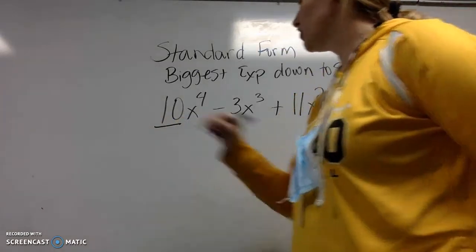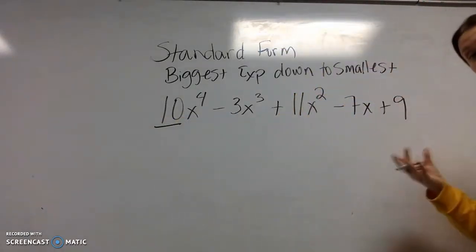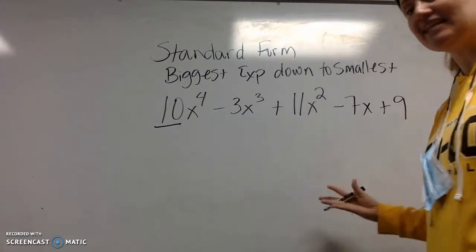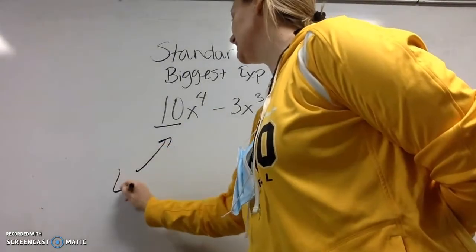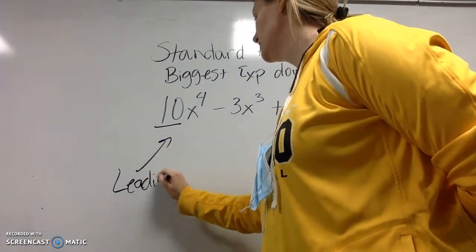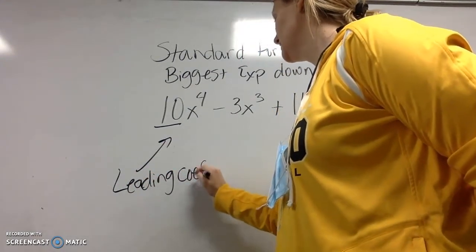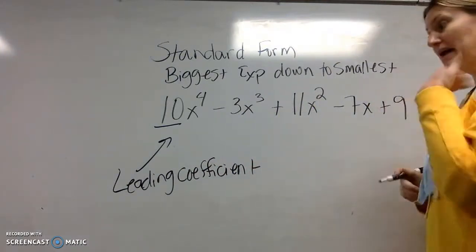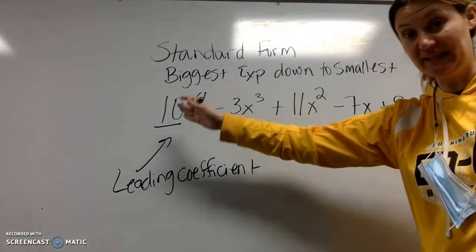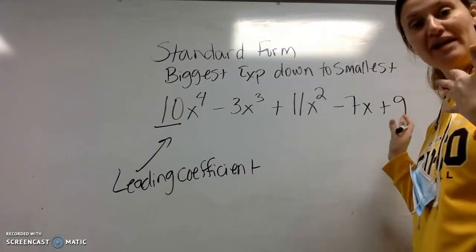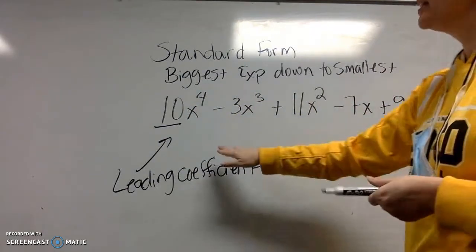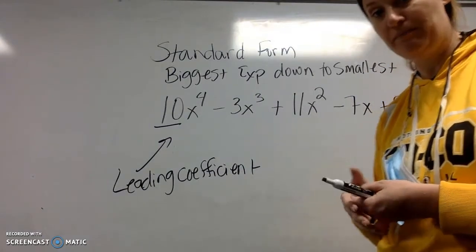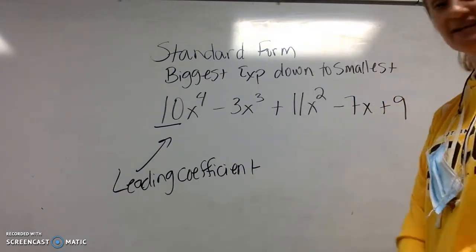Then the coefficient, if you are in standard form, the coefficient that leads it is called the leading coefficient. That's pretty easy. When your polynomial is in standard form, the leading coefficient, it leads all the rest. It does not mean it's the biggest coefficient. It's just the coefficient on your term when you are written in standard form. Our biggest coefficient is actually 11, and it's not the leading.